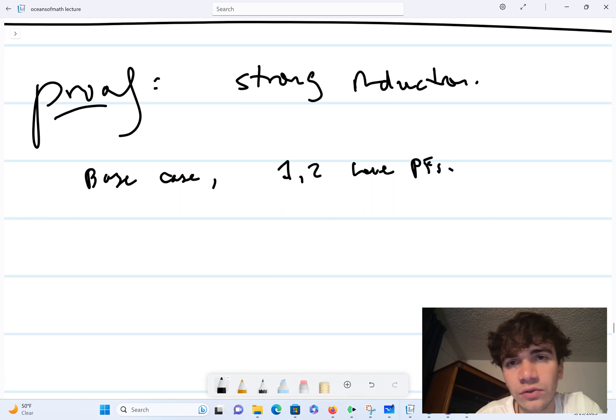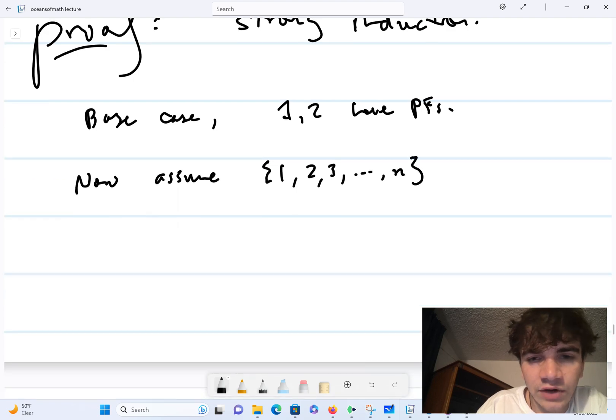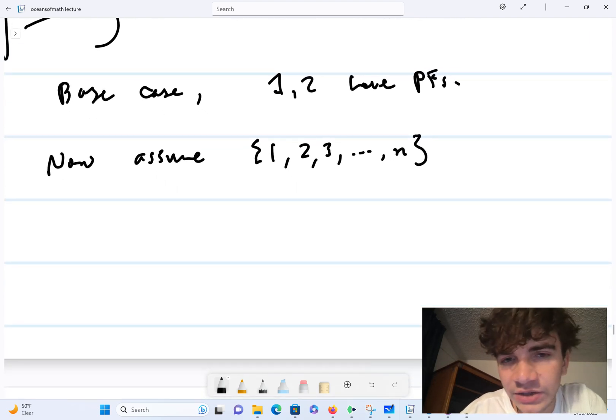Now assume that we have some list one, two, three, all the way to n of numbers which have prime factorizations.